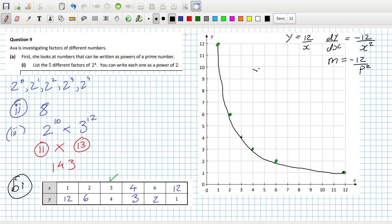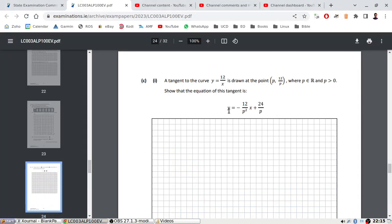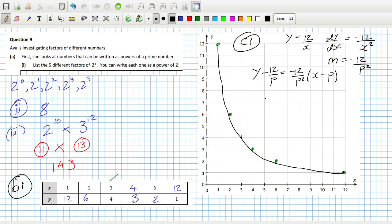So the tangent line is - sorry, this is part C1 here. The tangent line is y minus y1, which is 12/p, equals m times x minus x1. What form do I need? Okay, y = -12/p² × x + 12/p + 12/p. So that's 24/p. Nice.